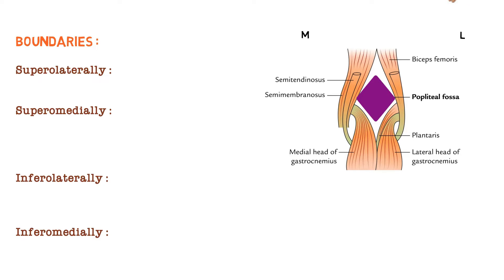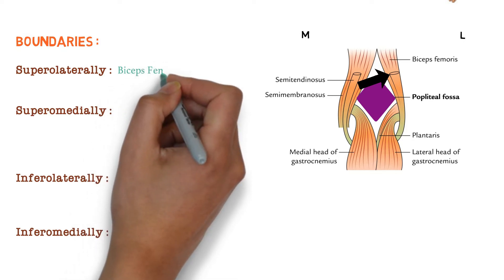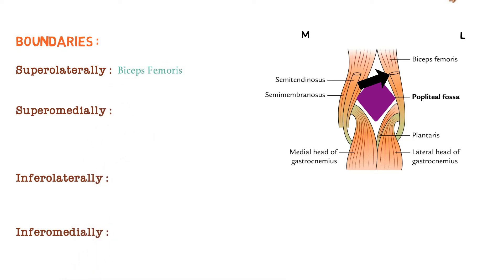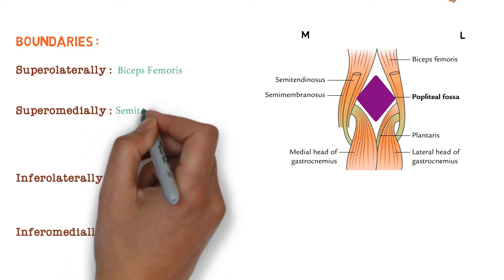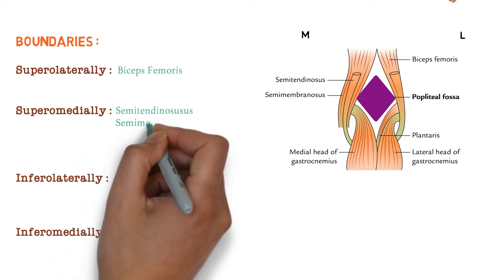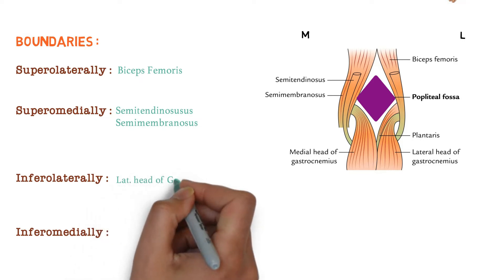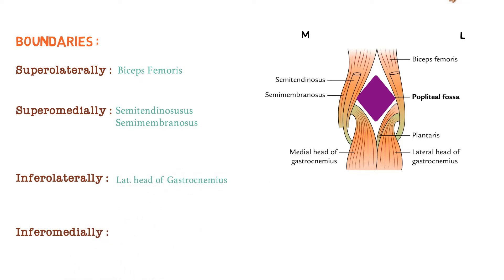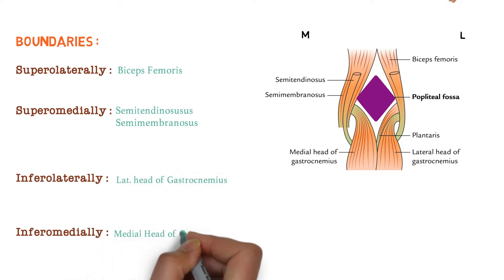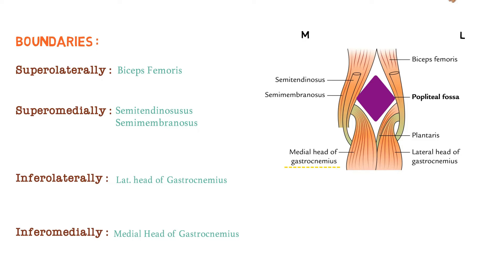Now look over this diagram. Superolaterally means this part — here we have biceps femoris, only one muscle that is biceps femoris. Now superomedially, this is the medial side — here we have two main muscles: semitendinosus and semimembranosus. Now inferolaterally, we have the lateral head of gastrocnemius. And inferomedially, the medial head of gastrocnemius. So in the inferior part, we have only one muscle that is gastrocnemius — laterally, lateral head, and medially, medial head.